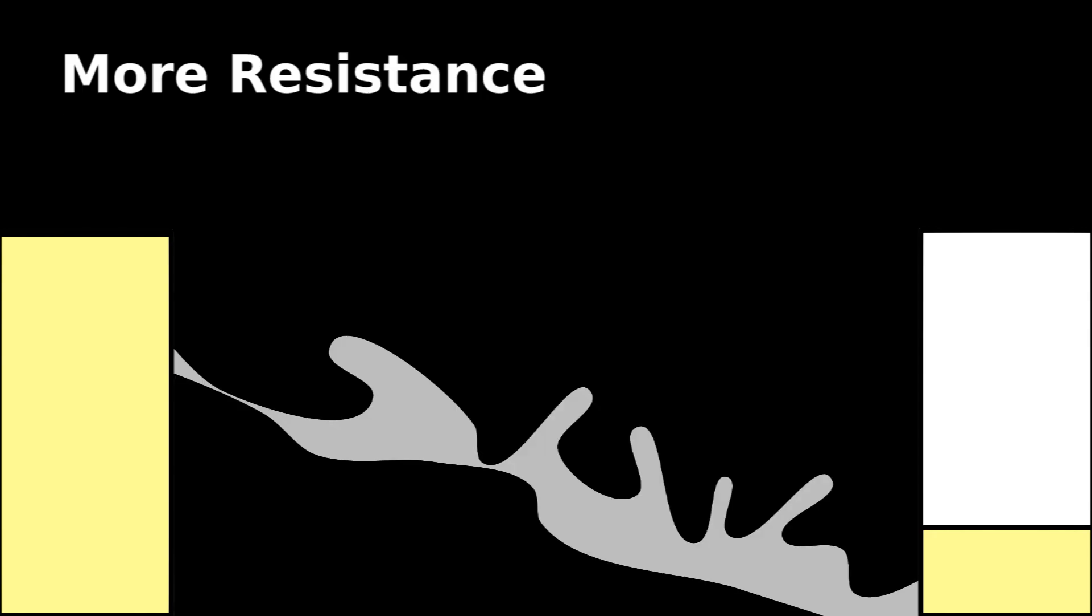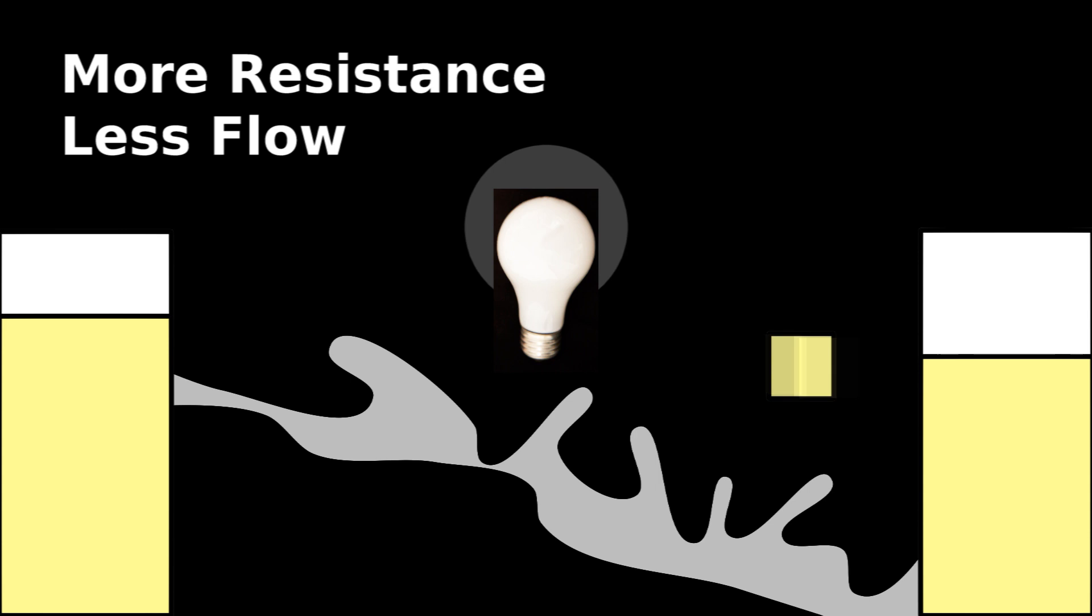If there is more resistance, because the wire is rough and less conductive, the electrons will struggle to flow down the wire. This slow flow of electrons means that the battery will last longer, but the bulb won't glow as brightly.